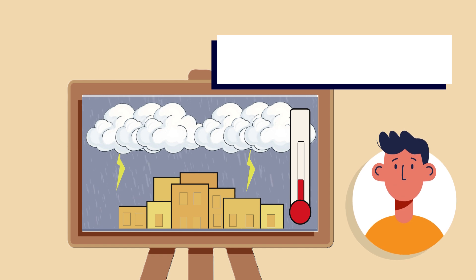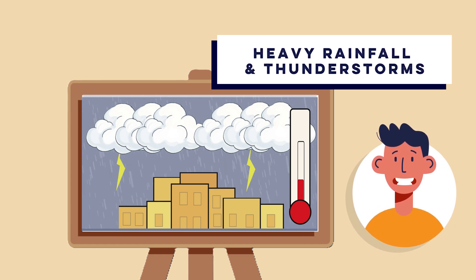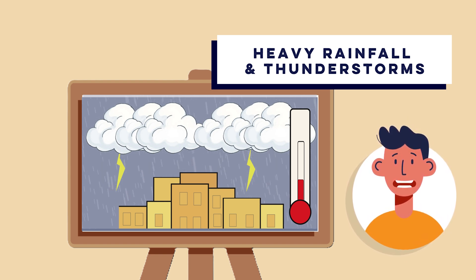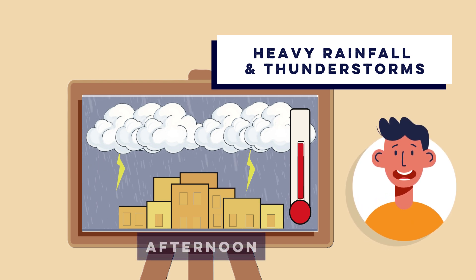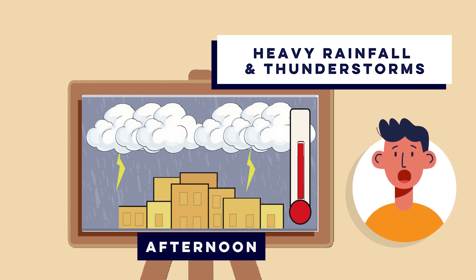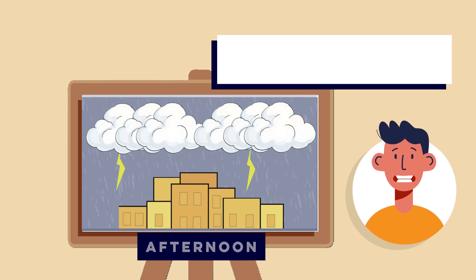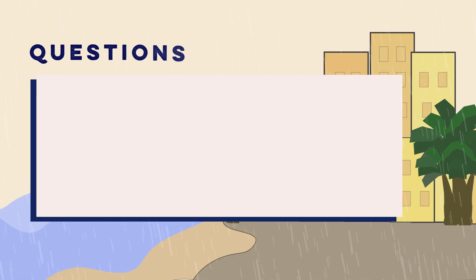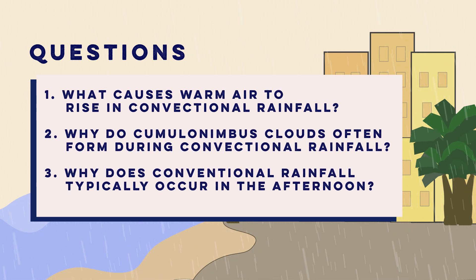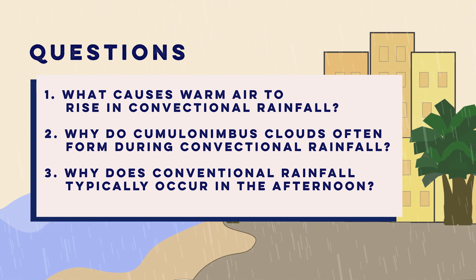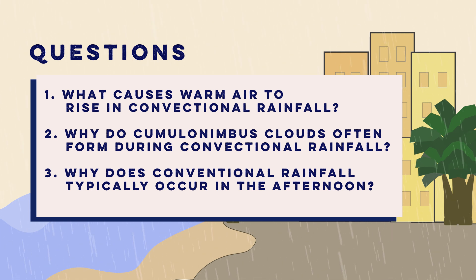Step five: heavy rainfall and thunderstorms. Once the clouds become saturated with moisture, precipitation occurs in the form of heavy rain. Because convectional rainfall results from intense heating, it often happens in the afternoon when temperatures are at their highest. In some cases, the rapid rising of warm air can lead to thunderstorms. Now that you know how convectional rainfall forms and why it is so common in tropical regions, next time you see a heavy, sudden downpour on a warm afternoon, you'll understand the powerful forces at play in the atmosphere.